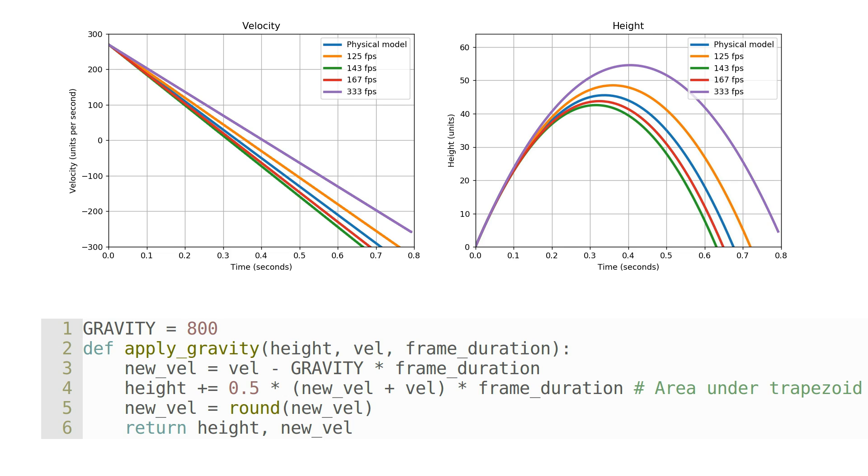Well, the Quake 3 network code sends the player's inputs for each frame in a packet, and the packet rate when playing over the internet is controlled by the CL max packets variable, which has a maximum value of 125. As such, if you're playing over the internet, there will be no more than 125 player movement commands per second.